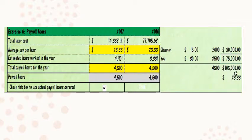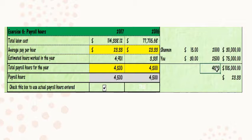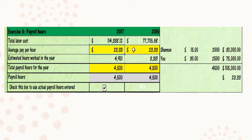You get paid $75,000, so the total payroll is $105,000 and the total payroll hours is 4,500. To get the average pay, you divide $105,000 by 4,500 to get $23.33. This is the amount that goes in here.